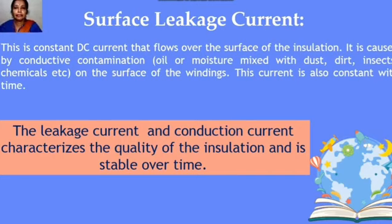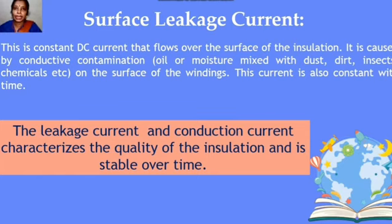The surface leakage current is a constant DC current that flows over the surface of the insulation. It is mainly caused by conductive contamination — oil or moisture mixed with dust, dirt, insects, or chemicals on the surface of the windings. This current is also constant with time. The leakage current and conduction current together characterize the quality of the insulation. In some literature, both conduction and surface leakage current are combined and called the leakage current component.